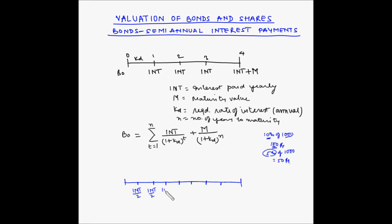The interest paid at each period is INT divided by 2, INT divided by 2, and so on. The maturity value remains the same because the face value is unchanged, so at the end of the tenure the investor gets M. KD, the required rate of interest, is annual. If we take semi-annual periods, KD must also be halved.